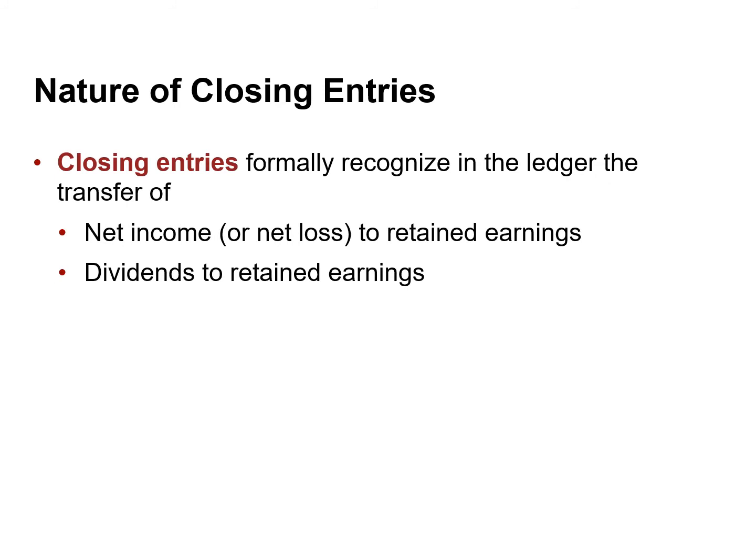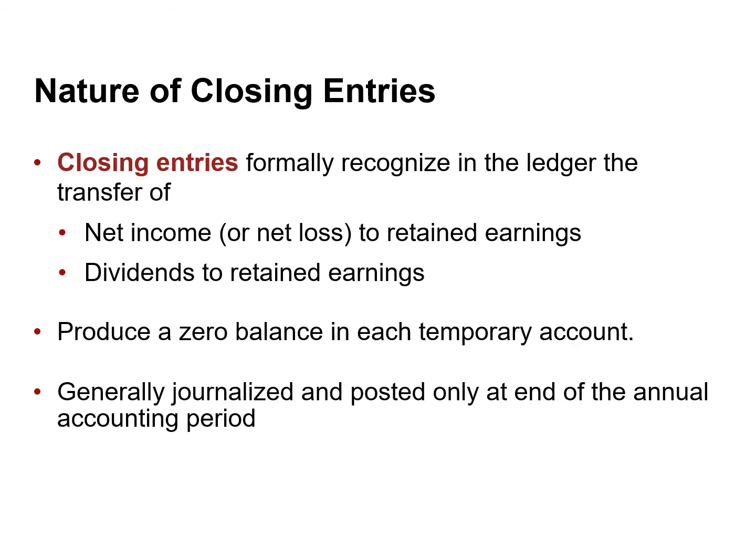Closing entries transfer net income or net loss, as well as dividends, to the retained earnings account. Closing entries produce a zero balance in each temporary account, so these accounts are ready to accumulate data about revenues, expenses, and dividends in the next accounting period. Closing entries usually take place only at the end of a company's annual accounting period.